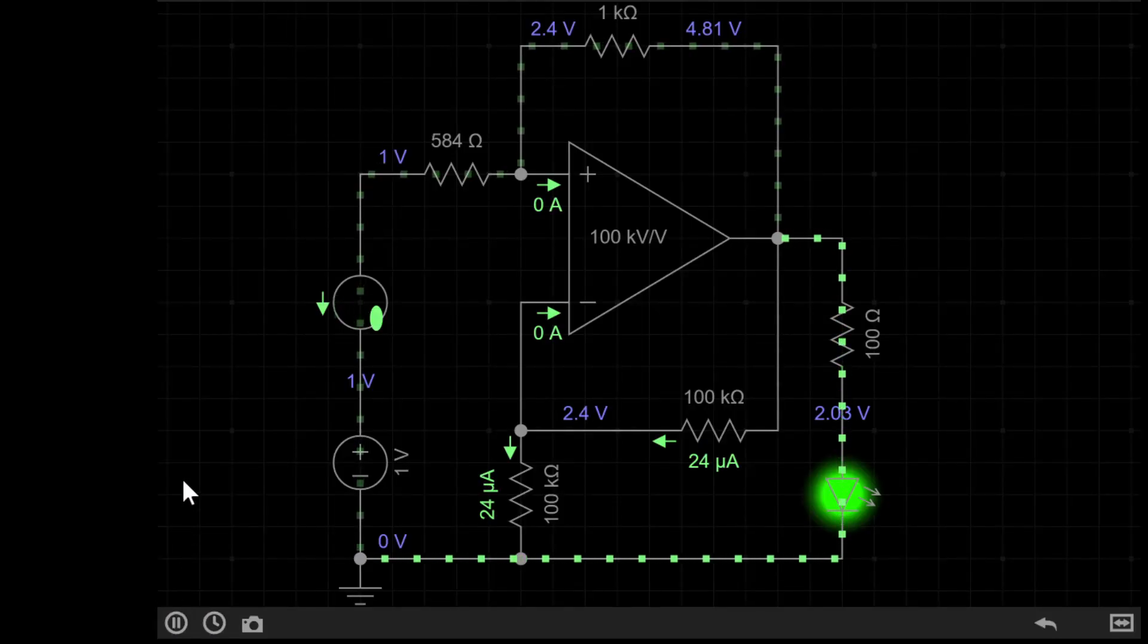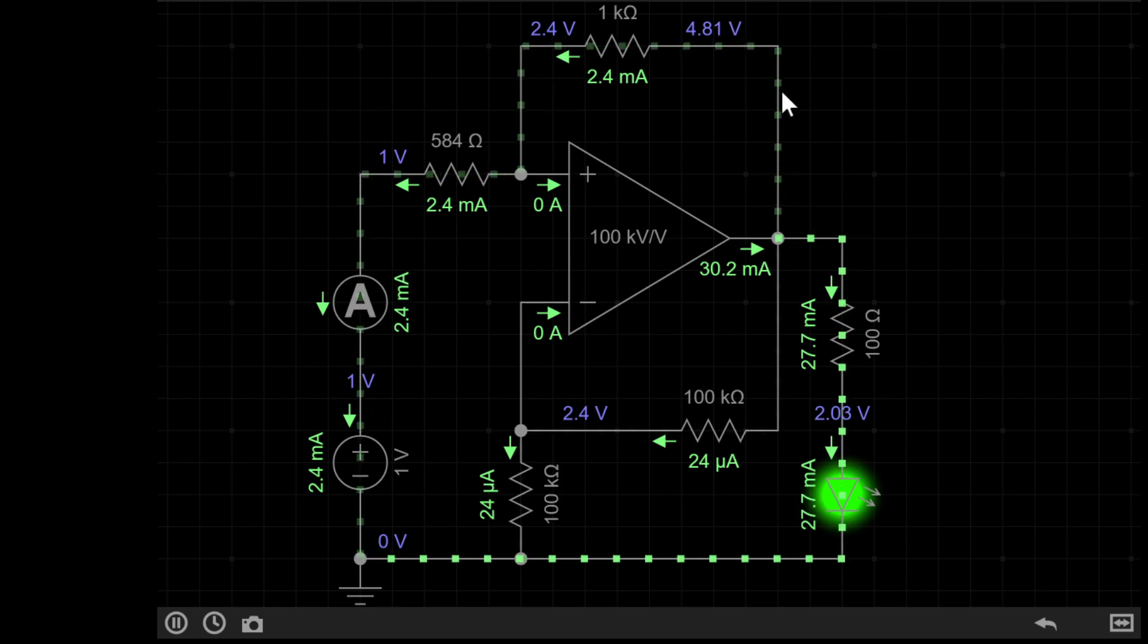If I run the simulation, you'll see the current is actually flowing back through the circuit. Can you see those green dots passing through? Going back through R1 up here, back through our input resistor, back through the supply. This essentially means that our negative resistance converter, or NRC, is working like a power supply.